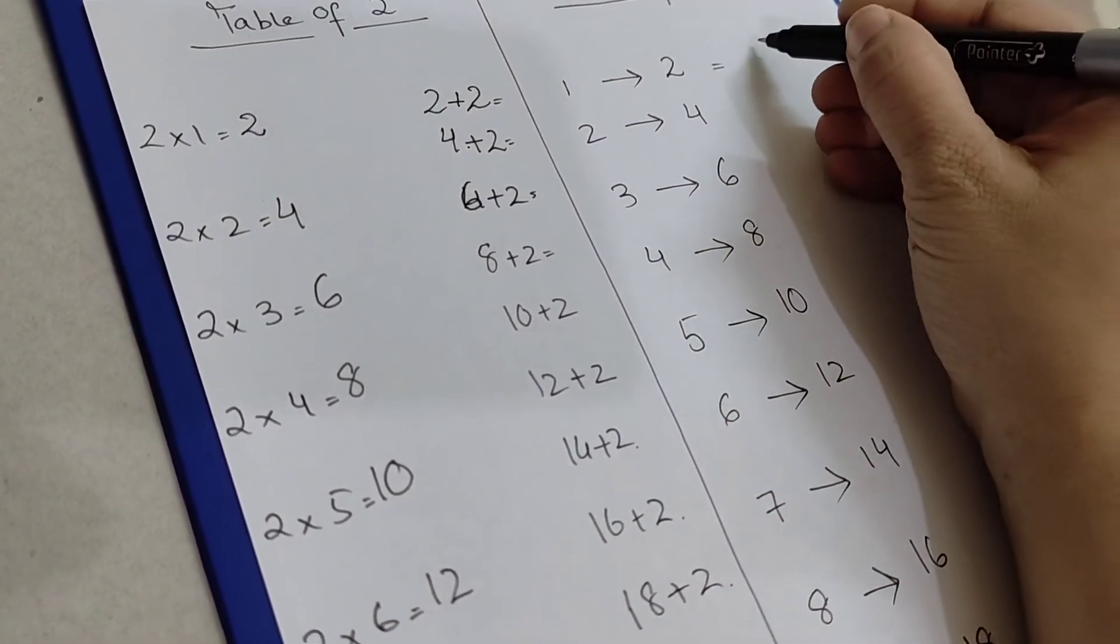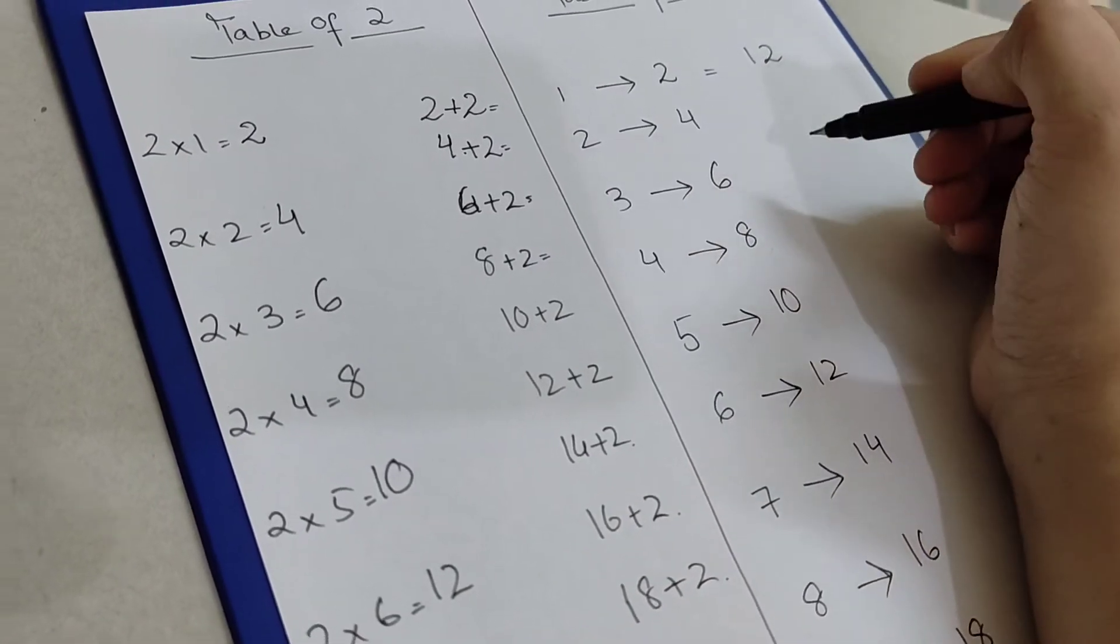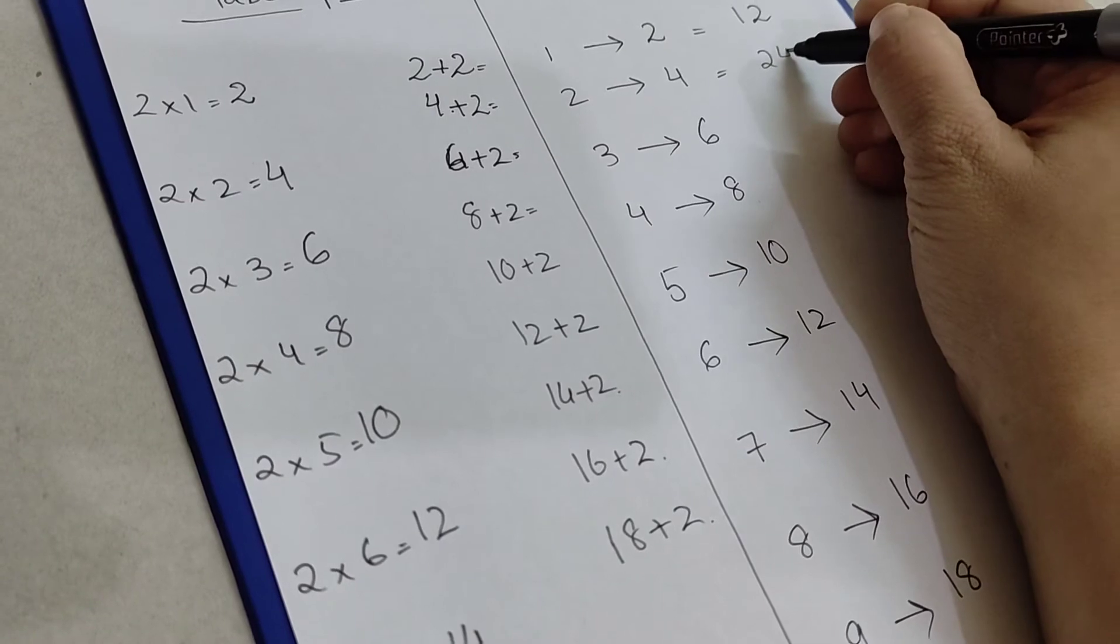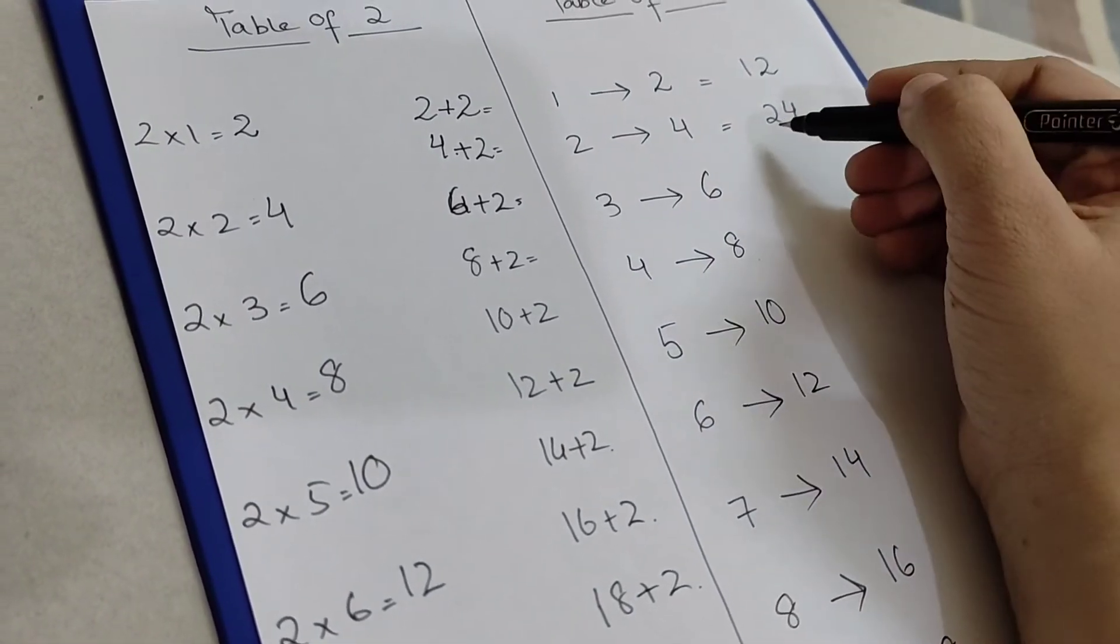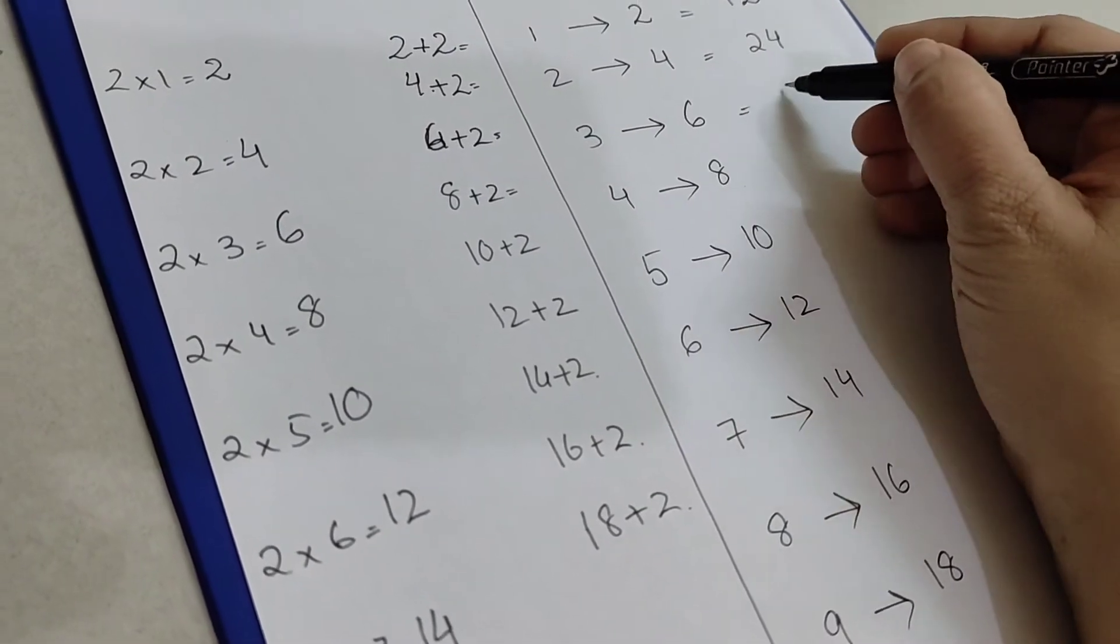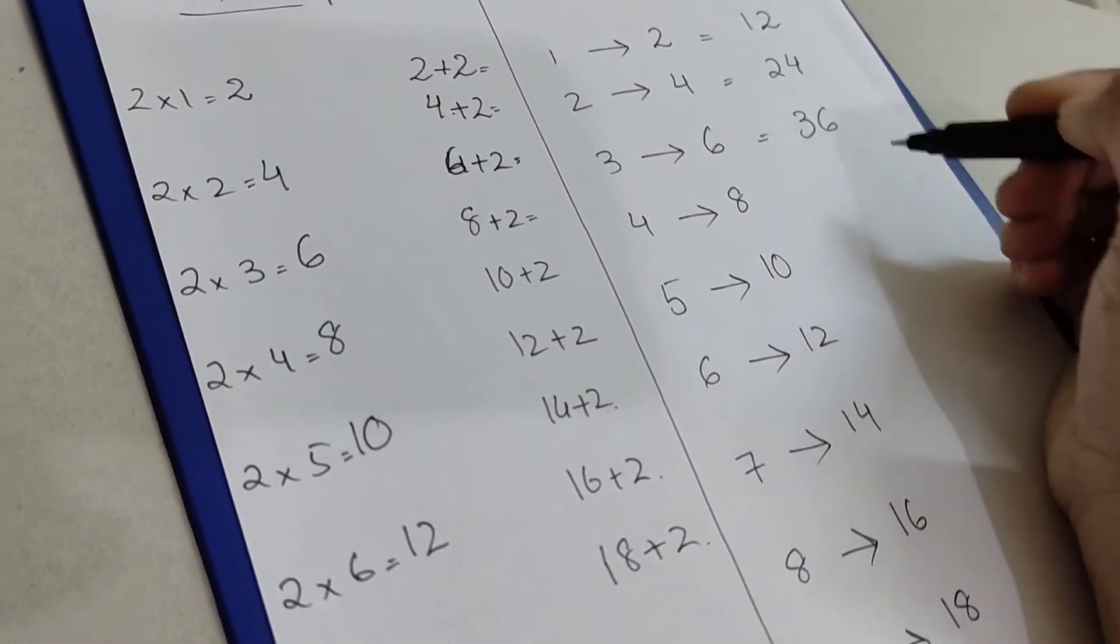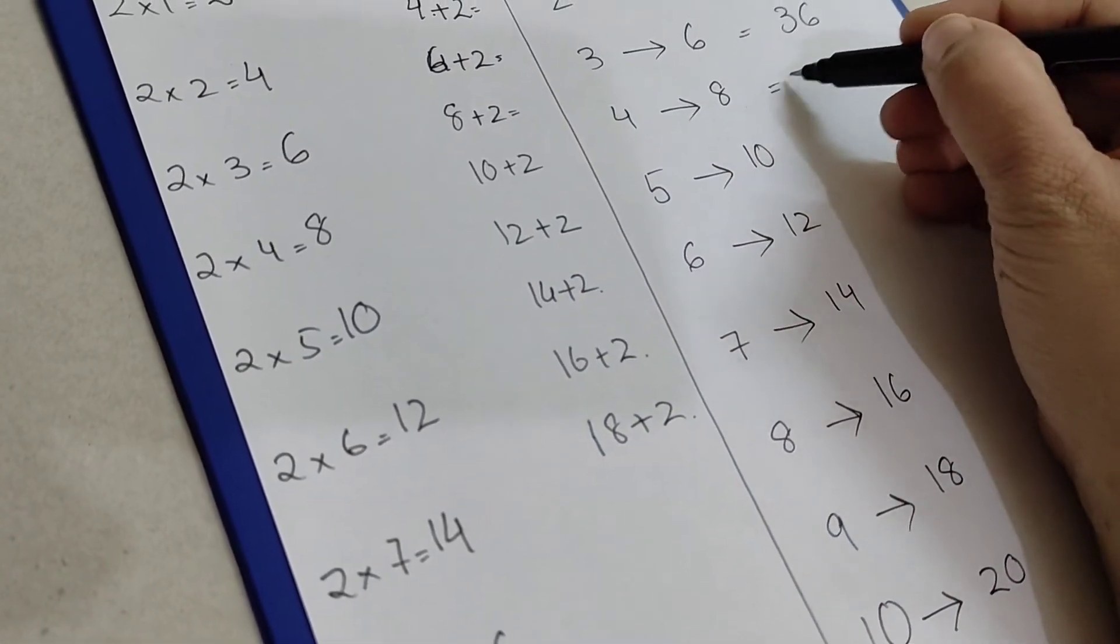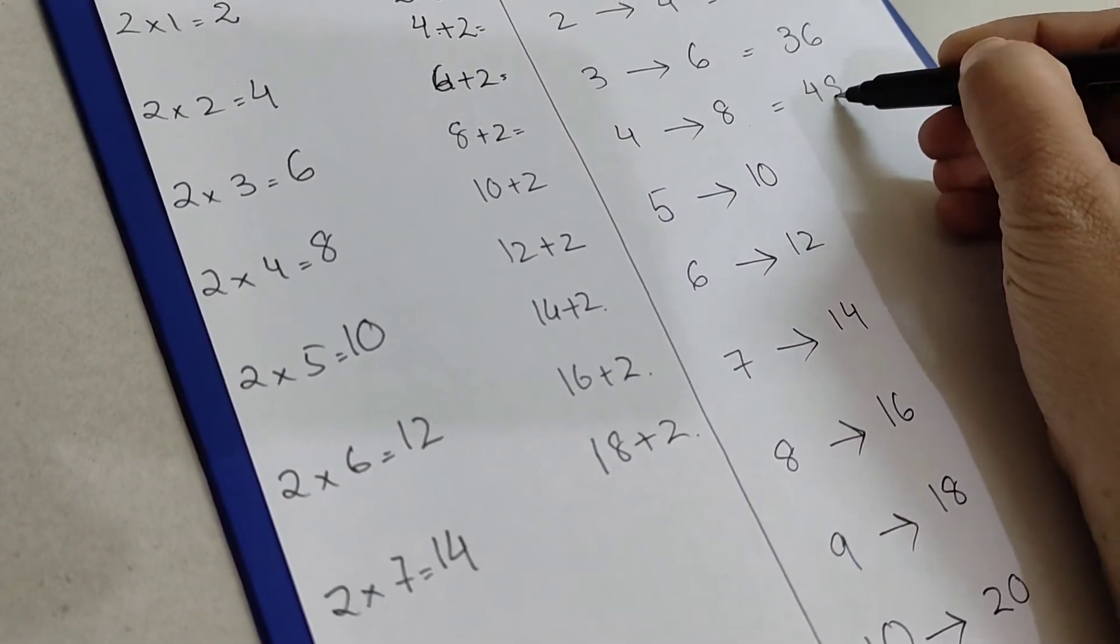So what's happening over here, we are going to write the answers for twelve times table. Let's see how: twelve times one is twelve, twelve times two is twenty-four, thirty-six, forty-eight.